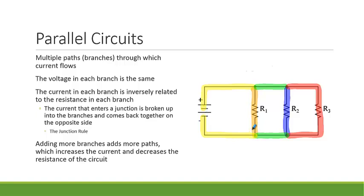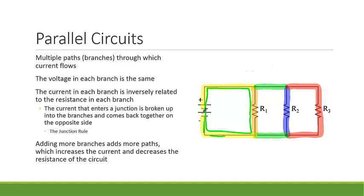Each of these branches gets the same voltage — the voltage supplied by the battery. This goes back to the idea of the loop rule: if we trace any loop, all of the voltage is being used up by the resistor in that branch. So the voltage drop across each branch is the same. Each branch gets the same amount of voltage, but the amount of current depends upon the resistor present in that branch — going back to Ohm's Law yet again.